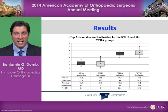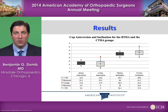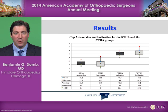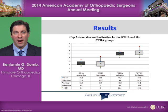Looking at this data in a different form, we can look at the average, standard deviation, and range. The black boxes represent robotics and the gray boxes represent the freehand technique. The standard deviation and range are much tighter for the robotic system because we've increased the precision of placement.